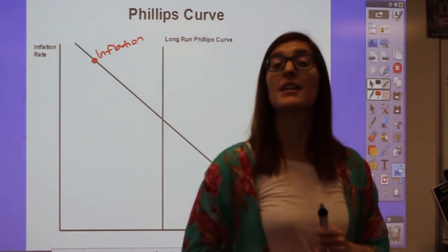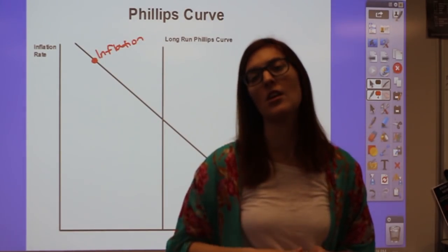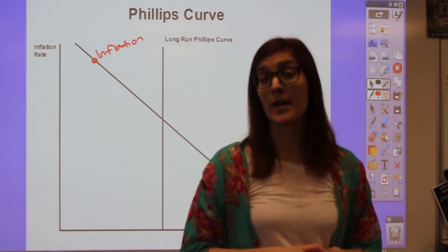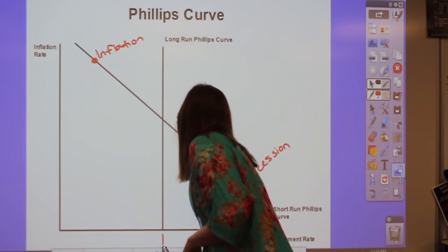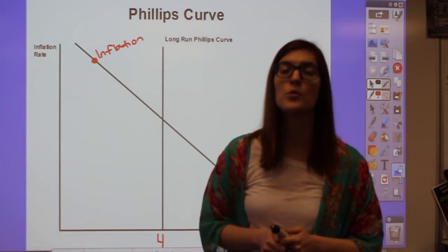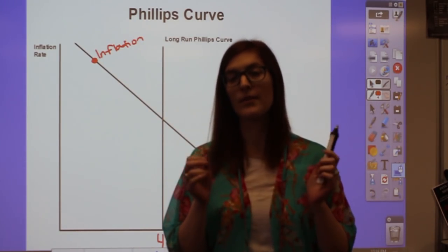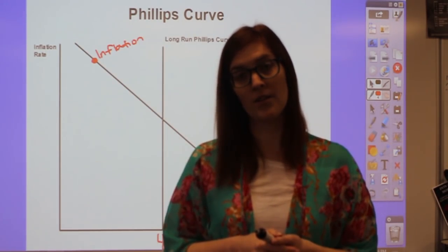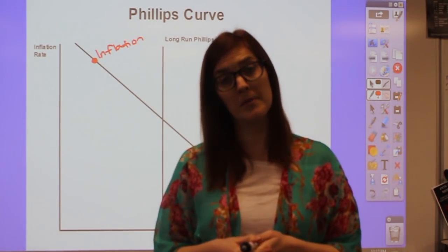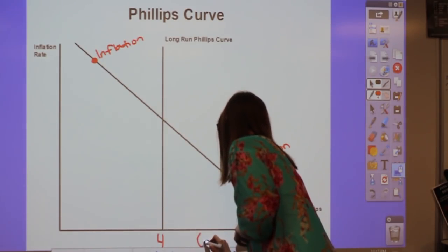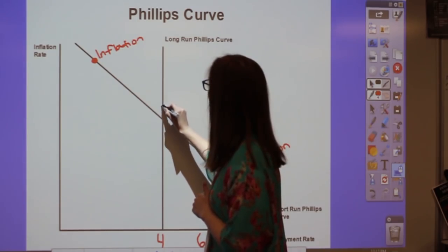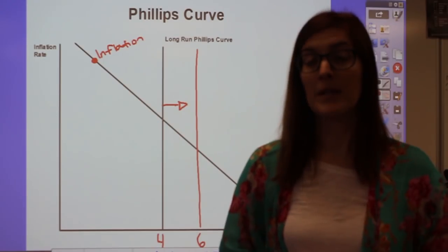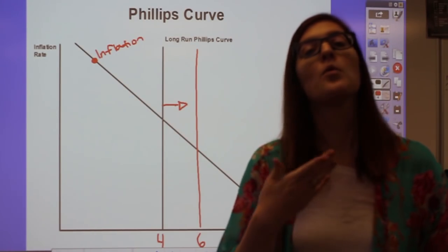Unlike the long run aggregate supply line, the long run Phillips curve actually does shift. Changes in unemployment compensation affect the natural rate of unemployment—typically around four to six percent at full employment. If the government increases unemployment compensation, people have less incentive to find a job, so at the next business cycle peak there will be a larger percent still on unemployment. That natural rate rises—say from four to six percent—shifting the long run Phillips curve to the right. Increase in unemployment compensation increases the natural rate, shifting the curve right.